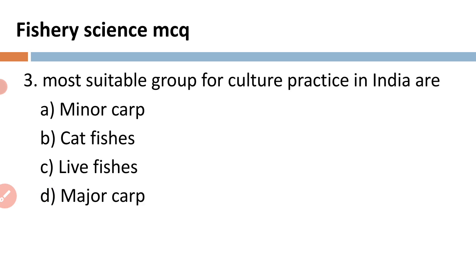Third question: the most suitable group for culture practice in India — A) minor carp, B) cat fishes, C) live fishes, and D) major carps. In the case of freshwater culture methods in India, the major carps are used for this purpose. So the most suitable group in culture practice in India is the major carp.